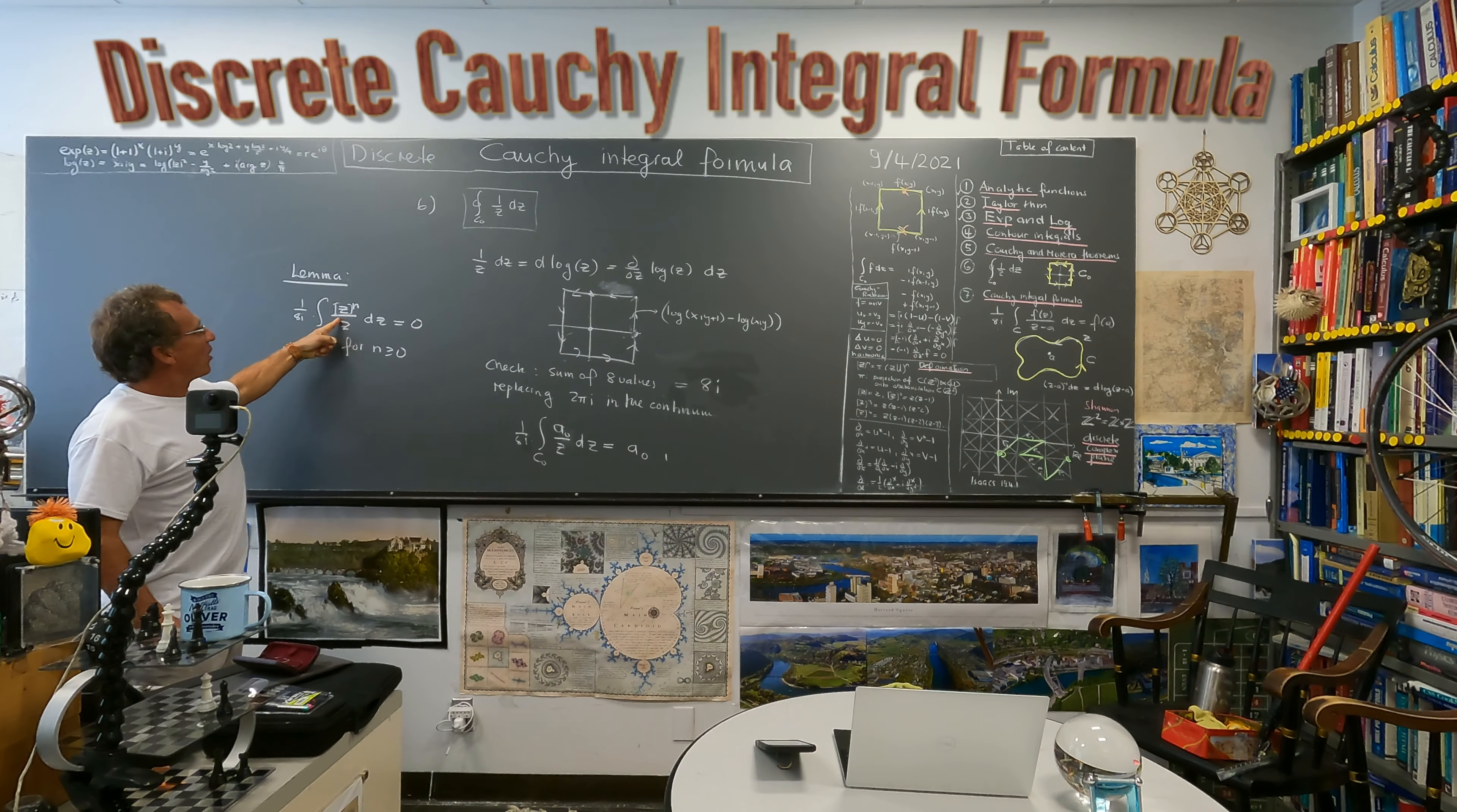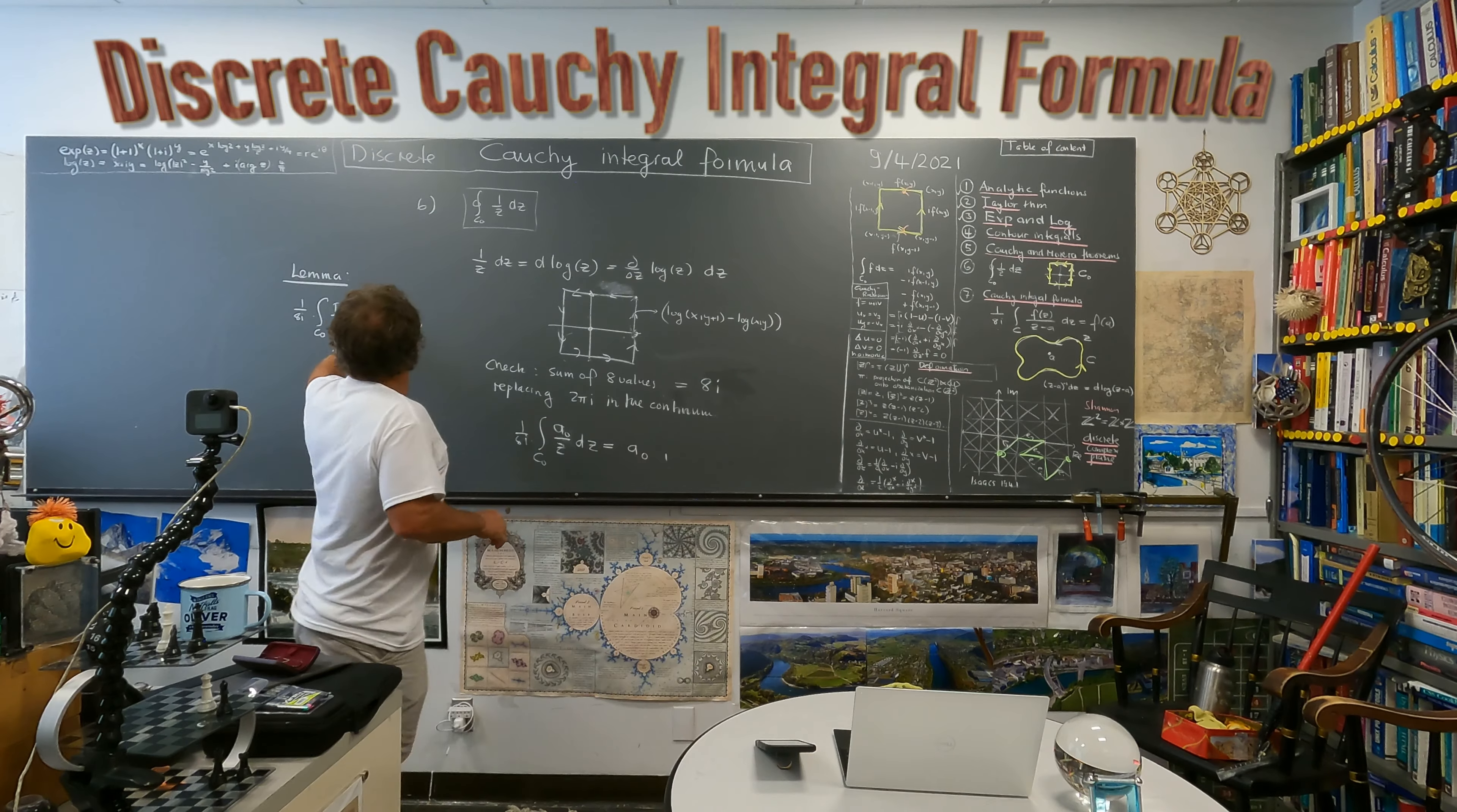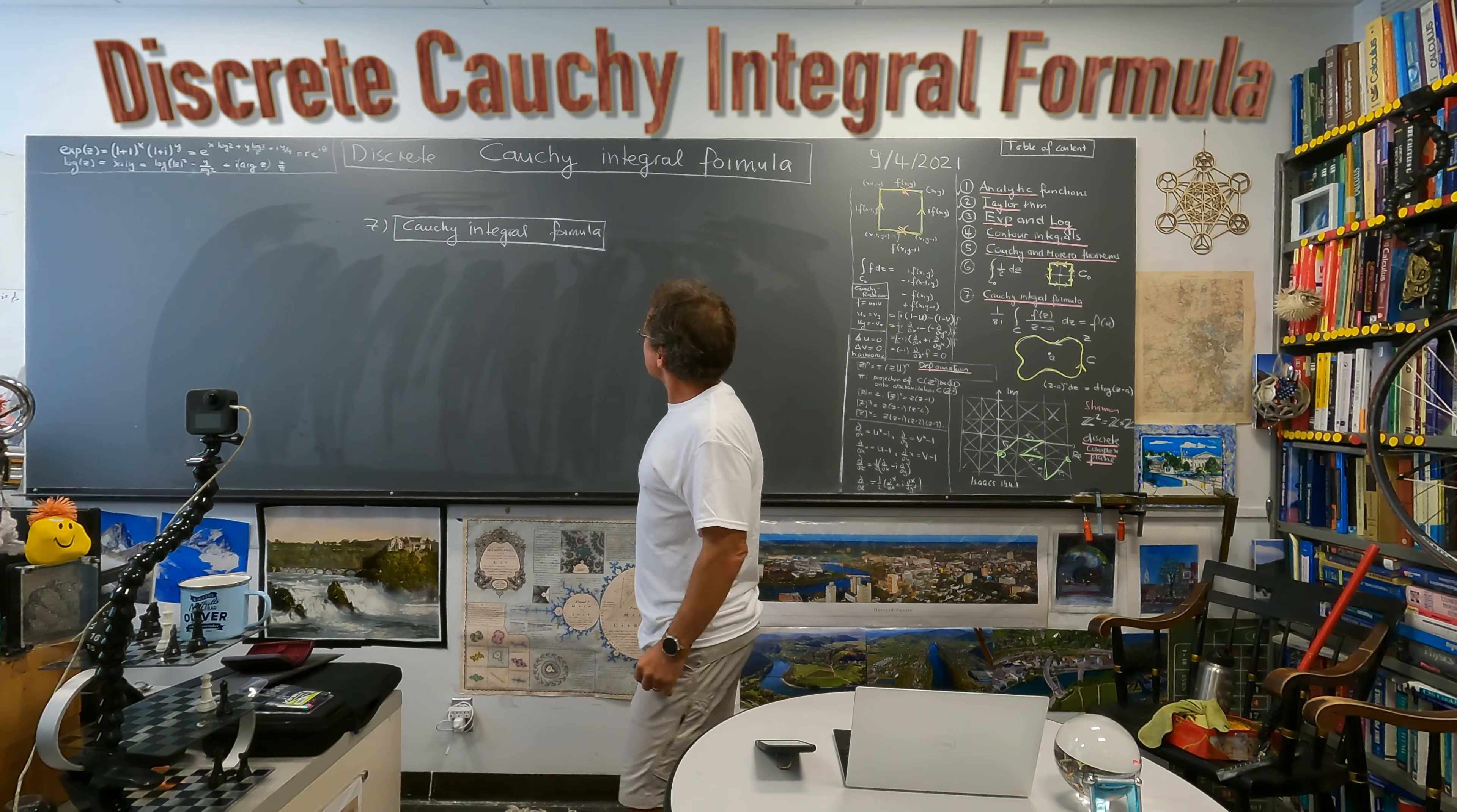And then we can just define like we have done before, we can define from this a one form and then we can go along this closed loop here which has length eight. You pick up this phase like two pi i. Continuum it's very obvious because you just cancel the z but we don't have this cancellation of z because one over z was defined as the discrete derivative of the log. So we have to actually compute the line integral and actually see that it is equal to eight i.